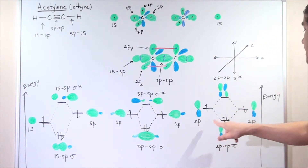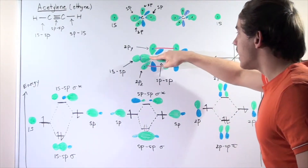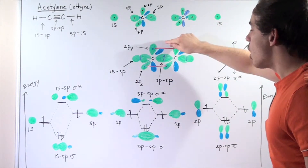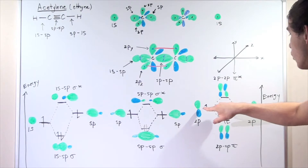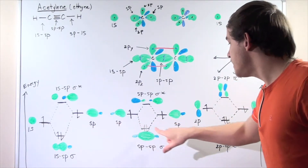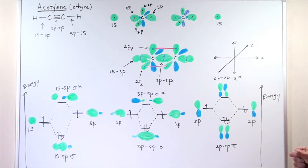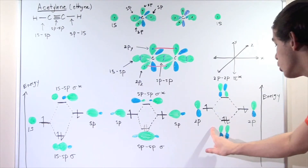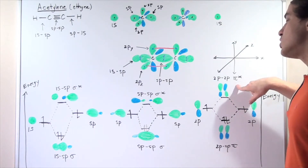Now let's look at the 2P-2P interaction — in other words, the pi bonding. Remember, the sigma bonds are along the x-axis, while the pi bonds are shown in red. When the 2P and 2P interact — which are higher in energy than the SP — they form the 2P-2P pi bonding molecular orbital and the 2P-2P pi anti-bonding molecular orbital. Both electrons go into the lower-energy pi bonding molecular orbital, and no electrons go into the pi anti-bonding molecular orbital.